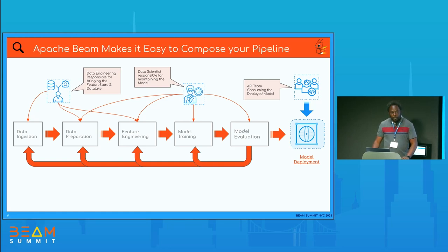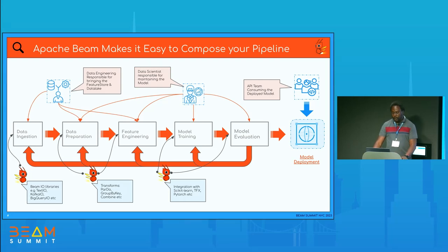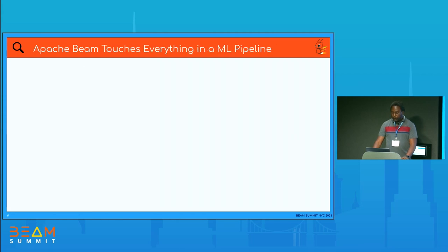The cool thing about Beam is it makes this easy, because you have all components around Beam that allow you to do this. You have the IOs that connect your data sources — BigQuery, Kafka, whatever the source. You have the transformation functions that let you build pipelines for data preparation and feature engineering. And you have the RunInference libraries that integrate with TensorFlow, scikit-learn, PyTorch, and more. Apache Beam touches everything in ML pipeline development.